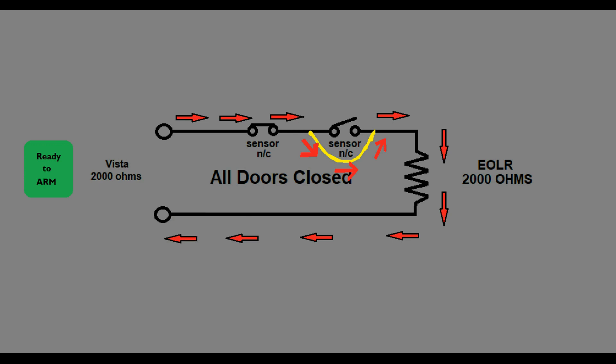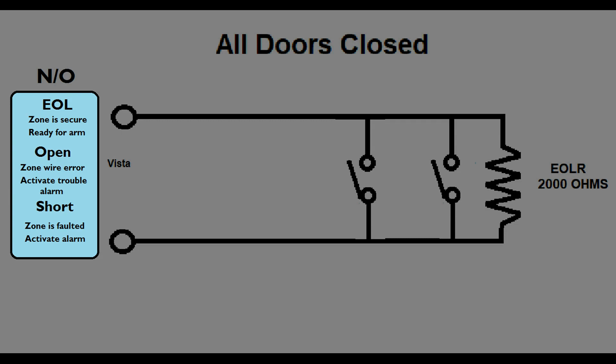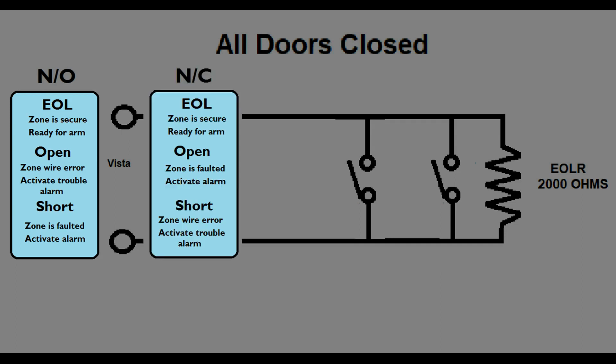Let's look at sensors hooked up in the normally open configuration. Just like before, the Vista will be looking for one of three possible conditions on your circuit: end of line resistor, open, or short. No matter which sensor you're using, the end of line resistor has the same effect on the Vista.